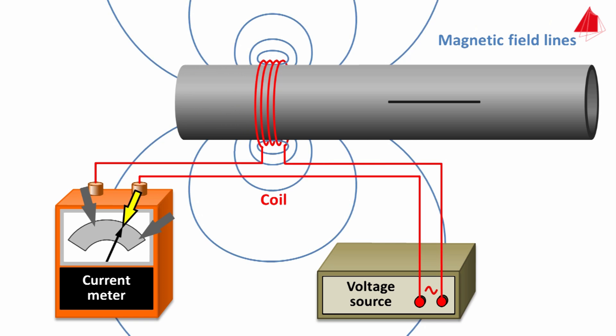Pushing an electrically conductive tube through the coil increases the effective current significantly. This is because the alternating magnetic field of the coil induces a current in the tube in the circumferential direction — the eddy current. The eddy current in turn generates its own magnetic field, which counteracts the magnetic field of the coil. Consequently, the self-induction is low and the current consumption is high.